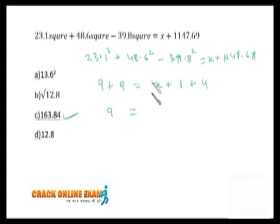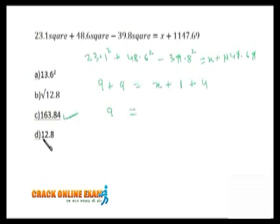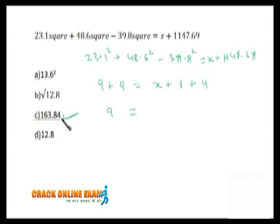So it's 4 plus 1 is 5. The digital root of x must be 4. In this option, 6 and 3 is 9, and we are left with 1, so 1 squared is 1 — digital root is not 5, so it's not the correct choice. Here, 8 plus 2 is 10, and 1 and 1 is 2 — digital root is 2, but we want 4. So here, 6 and 3 is 9, 8 plus 1 is 9, and we are left with 4. So the digital root of x is 4, meaning 163.84 is definitely the correct choice. By the digital root method or the unit digit method, either way you can solve this problem simply. I hope you are clear.